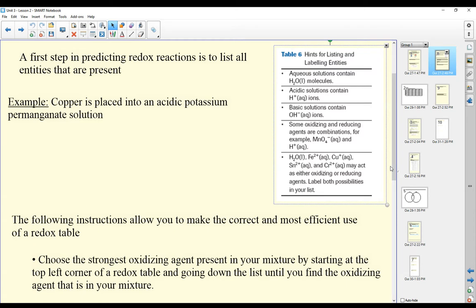As we said, a first step in predicting redox reactions is to list all entities that are present. Our first example is copper is placed into an acidic potassium permanganate solution.